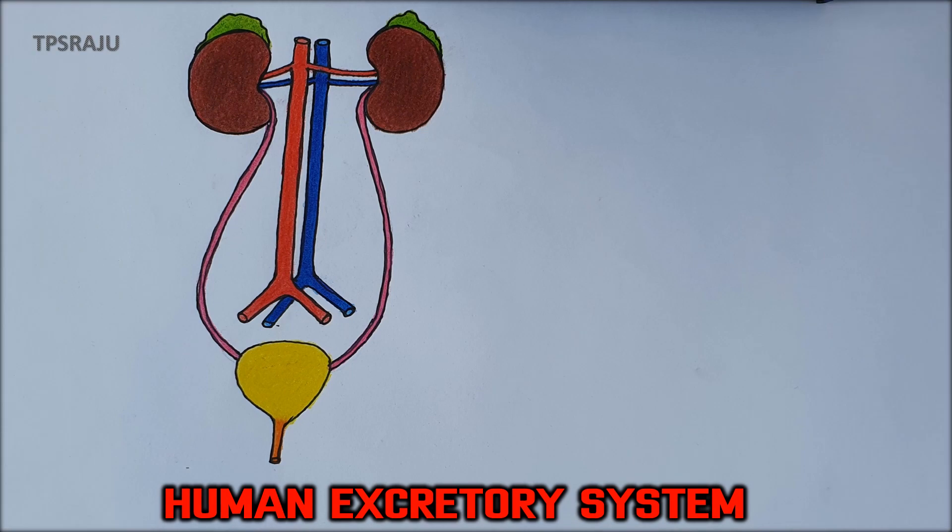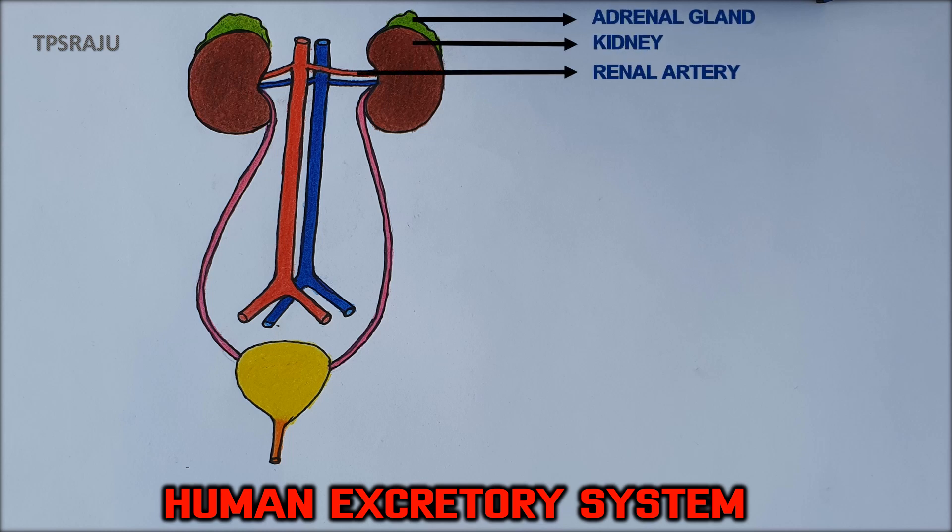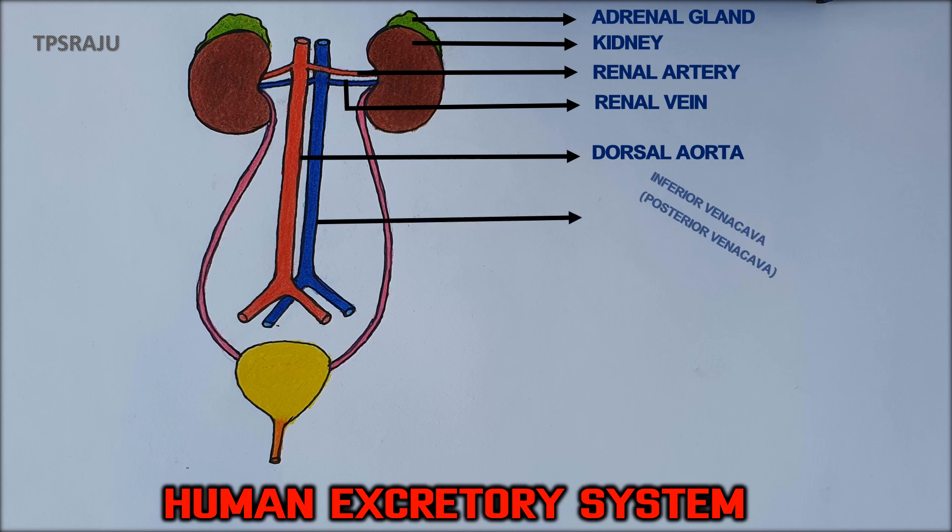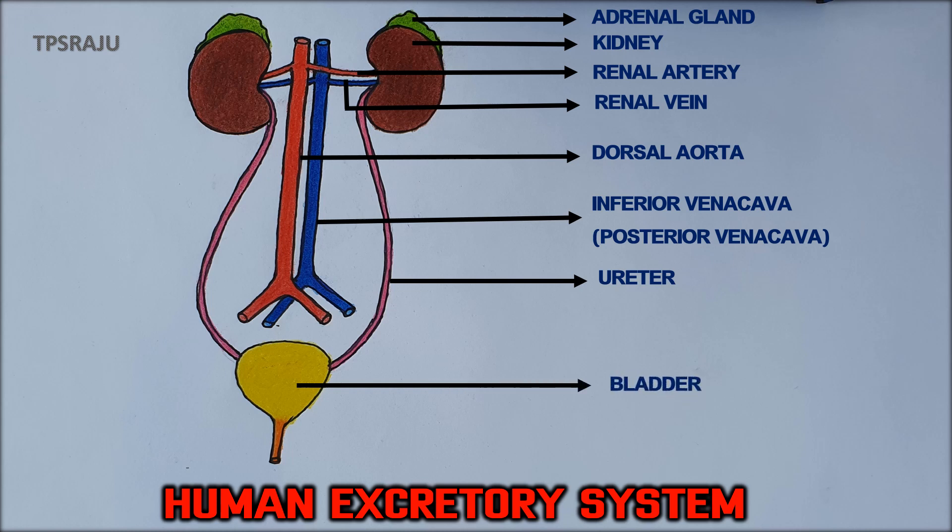Finally shall we label the parts. Adrenal gland. Kidney. Renal artery. Renal vein. Dorsal aorta. Inferior vena cava. Ureter. Bladder. Urethra.